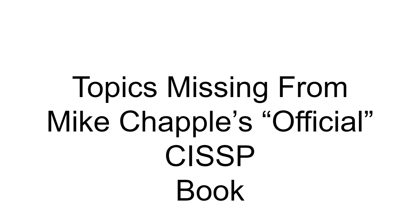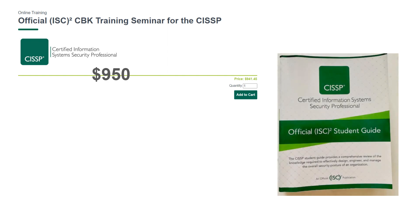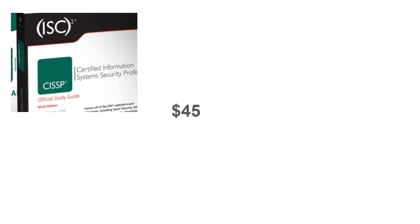Hello, and welcome to a video where I'll be talking about the items that are missing from Mike Chappell's CISSP study guide. The only real source of truth is the Common Body of Knowledge, found in ISC Squared's official CISSP CBK training seminar, priced at $950, also known as the self-paced training or the official student guide, which can only be obtained through very expensive training, typically in the thousands of dollars. Most people who can't afford either option need something else, which brings us to Mike Chappell's official study guide, priced at an affordable $45. I've compared the topics and terms from the Common Body of Knowledge with the topics in this book.